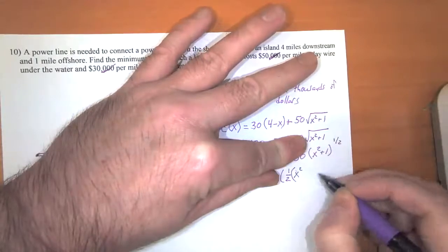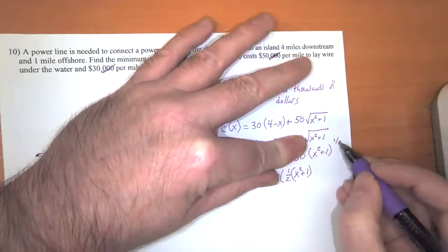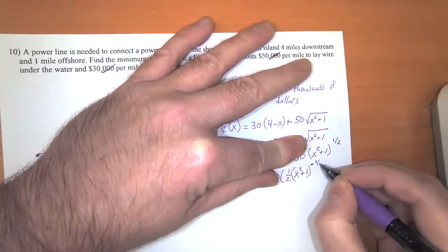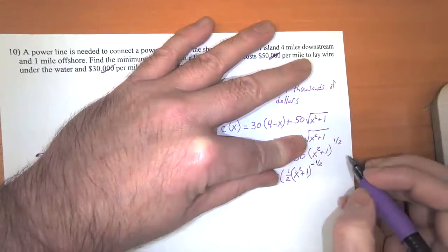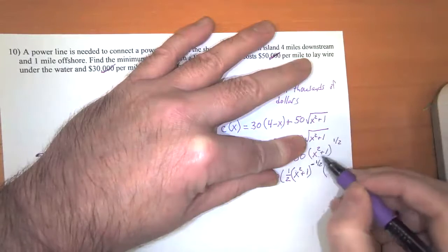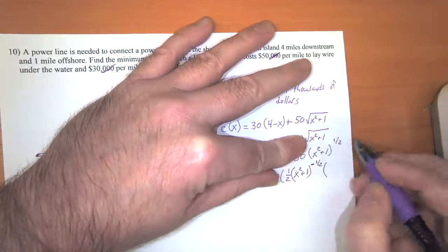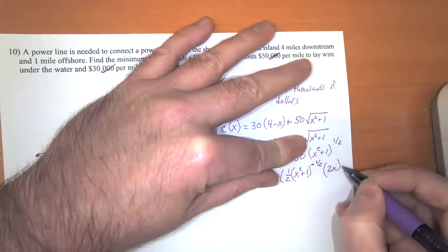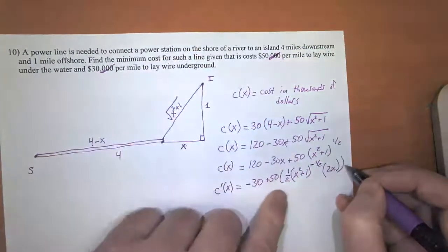So the derivative of this is: the derivative of something to the one half power is going to be one half times that thing, which is x squared plus one, and then we need to reduce the exponent by one, so that's going to become negative one half. And then we have to multiply that by the derivative of the inside function, so the derivative of x squared plus one is 2x.